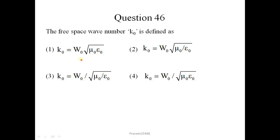So question number 46. The free space wave number K0 is defined as. So expression for K0 is, correct answer is this. Omega under root mu0 to epsilon0. So correct option is 1.